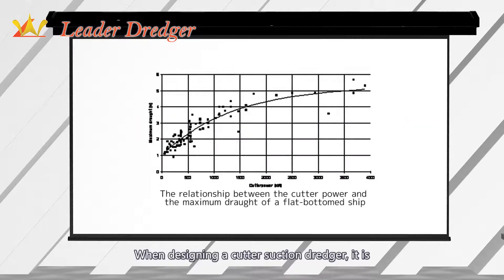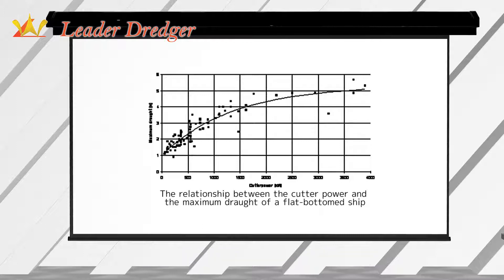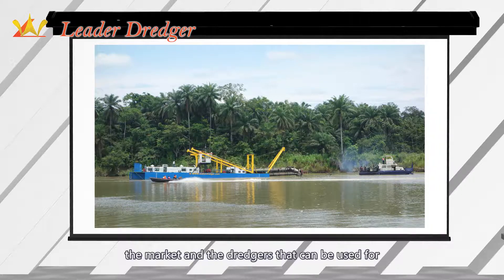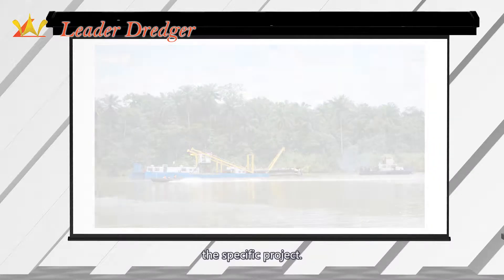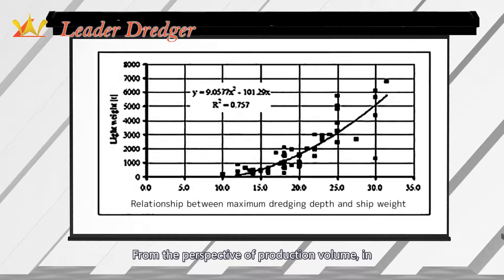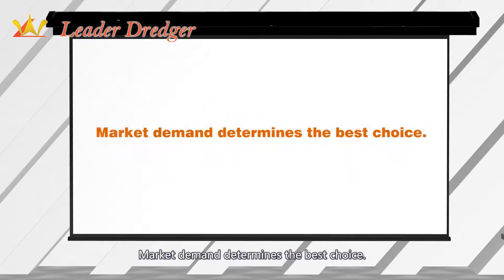When designing a cutter suction dredger, it is necessary to consider the maximum and minimum dredging depth, because these affect the availability of the dredger. When the dredging depth increases, it results in a deeper draft of the hull, which increases the minimum dredging depth. Increased dredging depth can improve the availability of dredgers. The production volume is determined by the market and the dredgers available for the specific project. From the perspective of production volume, the suction depth determines whether an underwater pump is required. Underwater pumps are generally very expensive, and market demand determines the best choice.